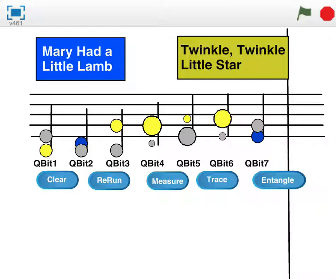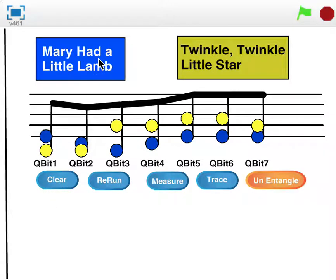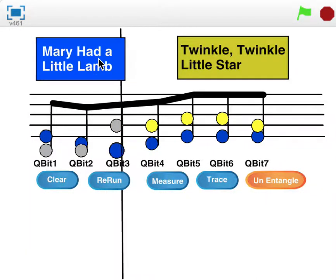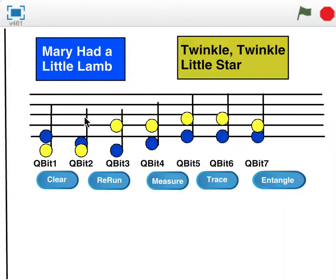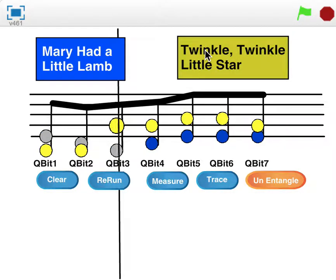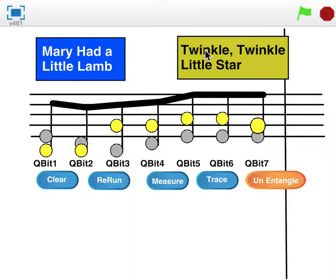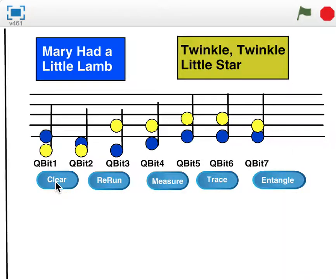For example, if all ones are outputted, then it plays all blue notes — Mary Had a Little Lamb. If all zeros are outputted, then it plays all yellow notes — Twinkle Twinkle Little Star. If a combination of ones and zeros are outputted, then some notes from each song are played in the order corresponding with the ones and zeros.